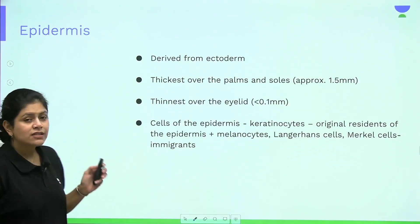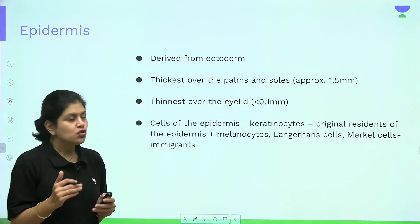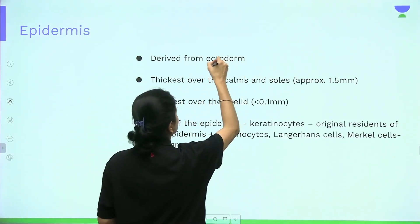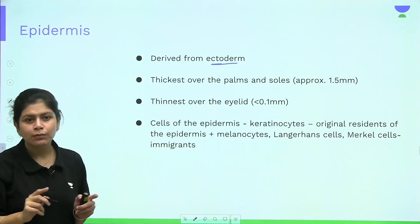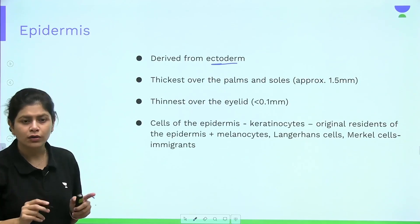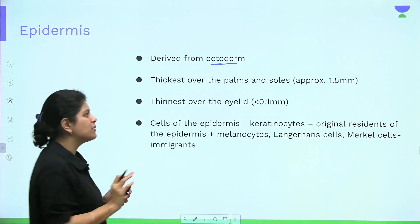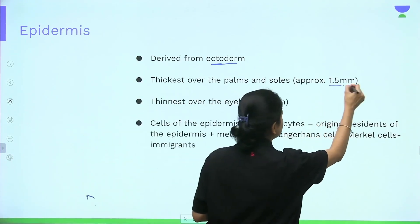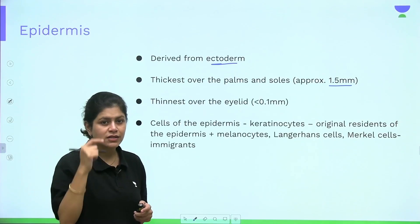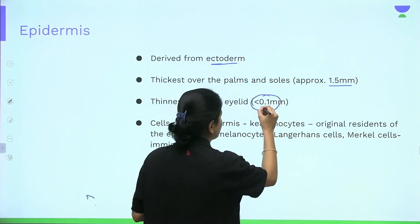Now let's study the epidermis. The epidermis is derived from the ectoderm — this is a very important MCQ point. The thickest epidermis is seen over the palms and soles, approximately 1.5 millimeters, and the thinnest epidermis is over the eyelids, which is less than 0.1 millimeters.